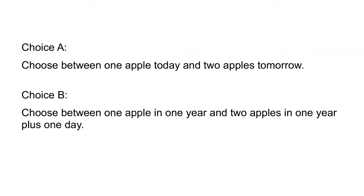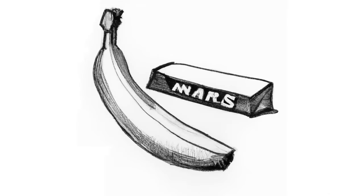Here is one intuitive set of choices from Thaler. Choice A: choose between one apple today and two apples tomorrow. Choice B: choose between one apple in one year and two apples in one year plus one day. Some people might select one apple today in the first choice, but no one would select one apple in one year in the second choice. We can also see evidence for preference reversal in situations where the choice is between a healthy and unhealthy option.